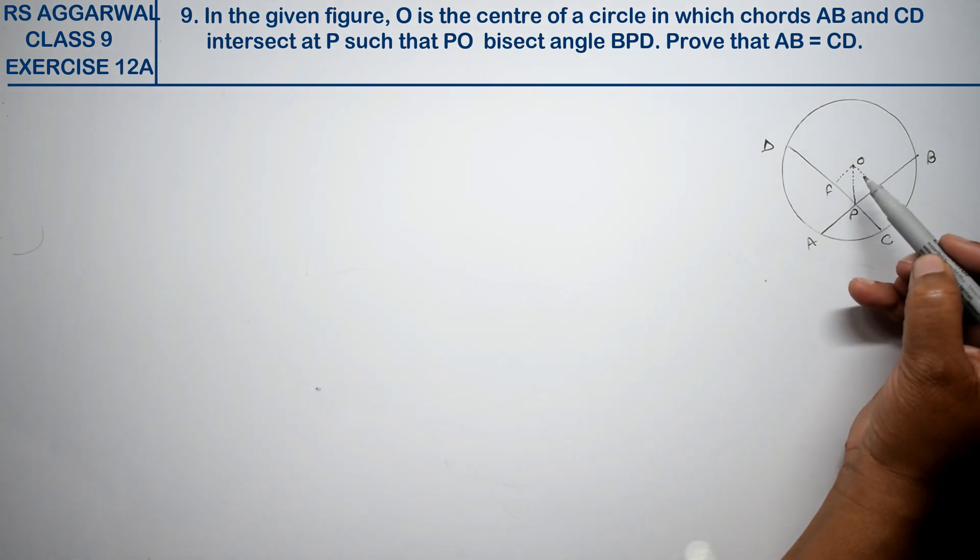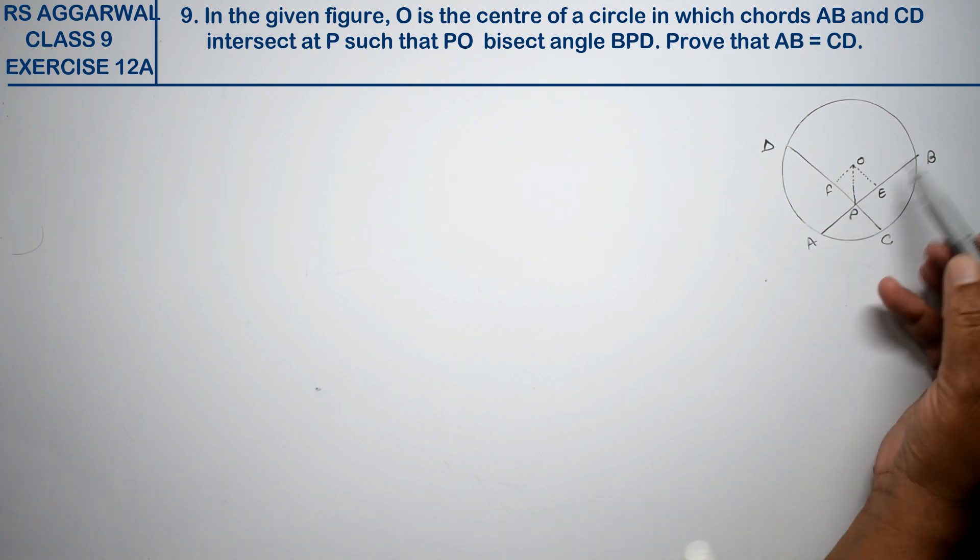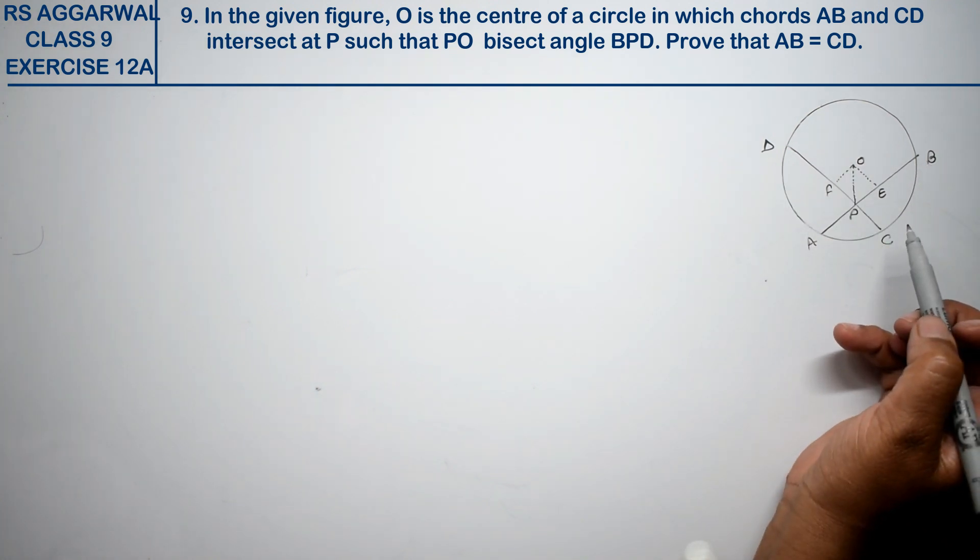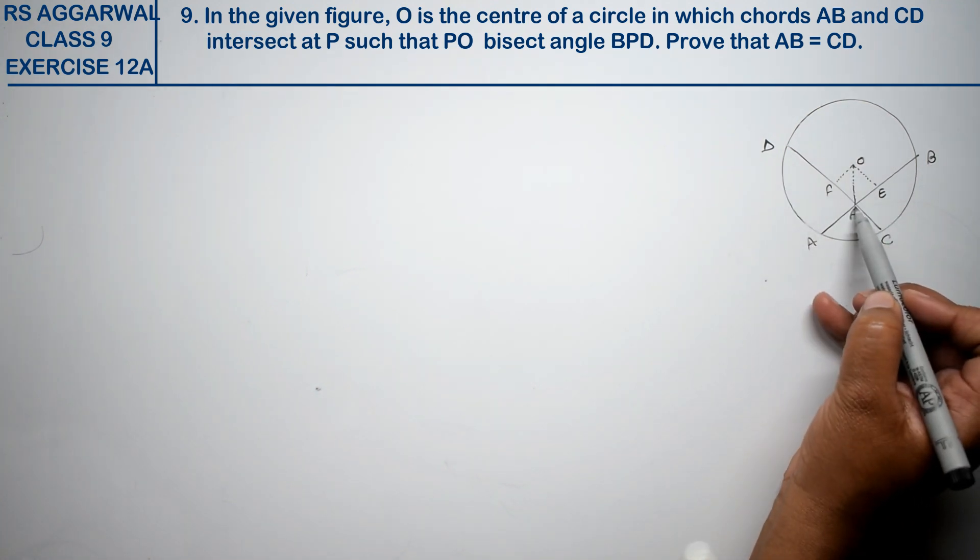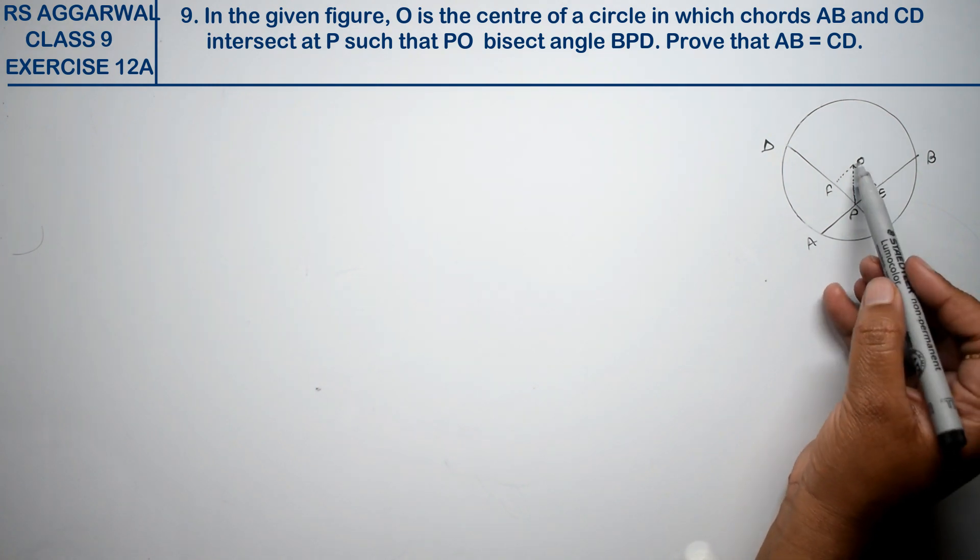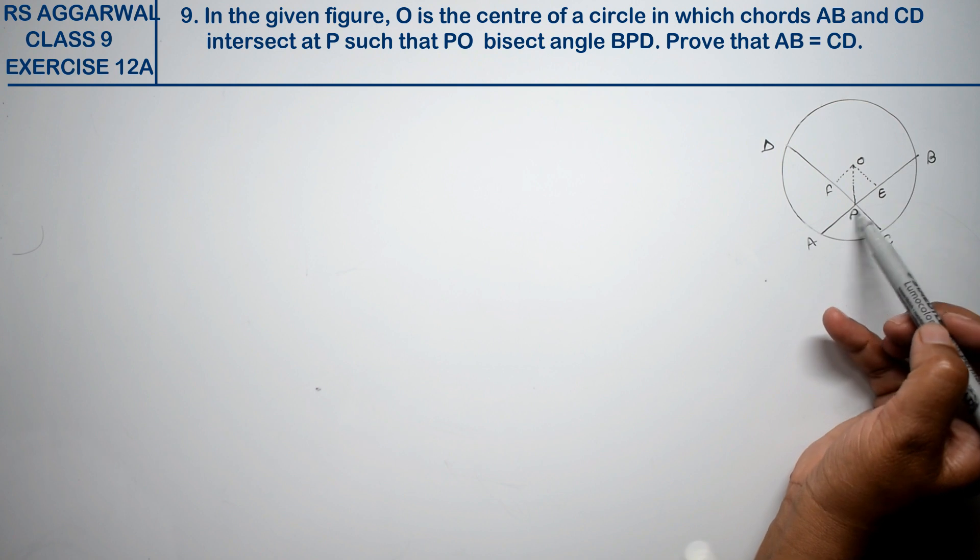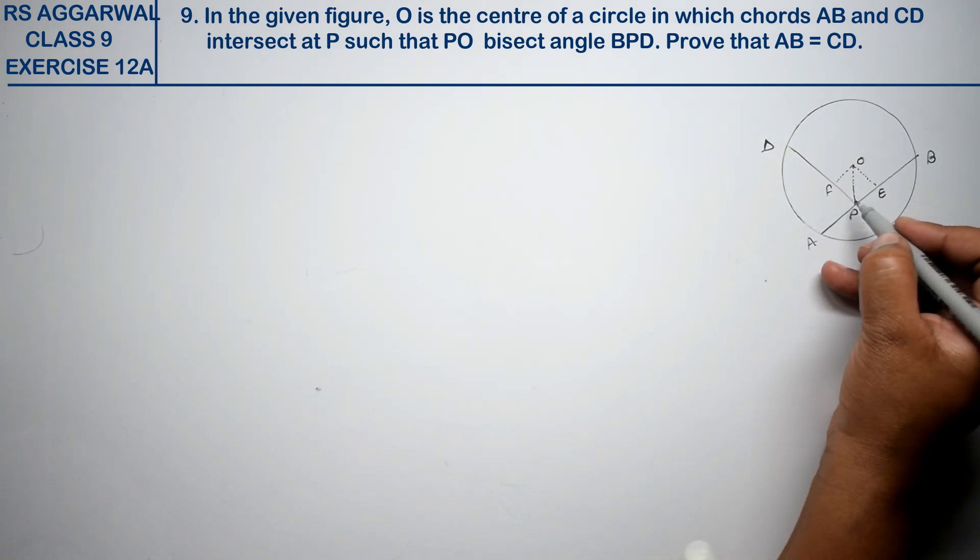Friends, in this figure O is the center and AB and CD are two chords which intersect at point P, such that PO bisects angle BPD. Bisect means this angle is equal to that angle.